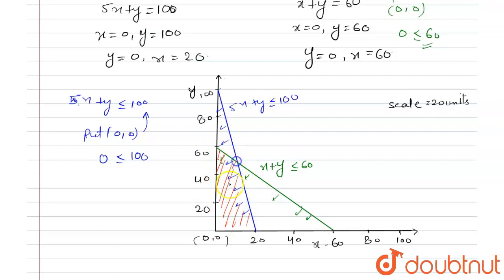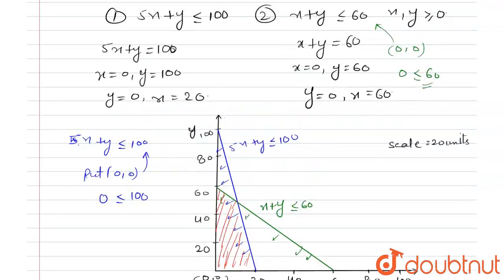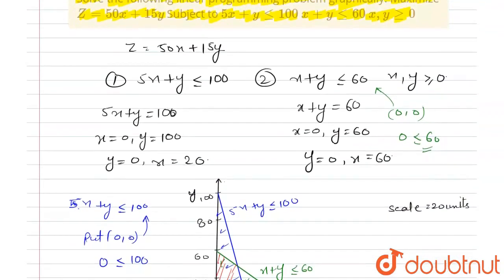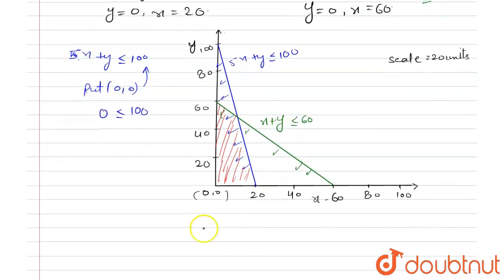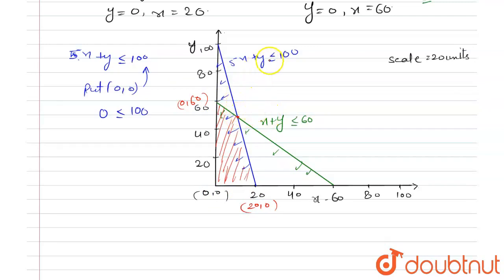This is the common region covered by both equations and now we have to maximize z equals 50x plus 15y. The corner points are: origin (0, 0), (20, 0), (0, 60), and the intersection of 5x plus y equals 100 and x plus y equals 60. Subtracting both equations gives 4x equals 40, so x equals 10 and y equals 50.